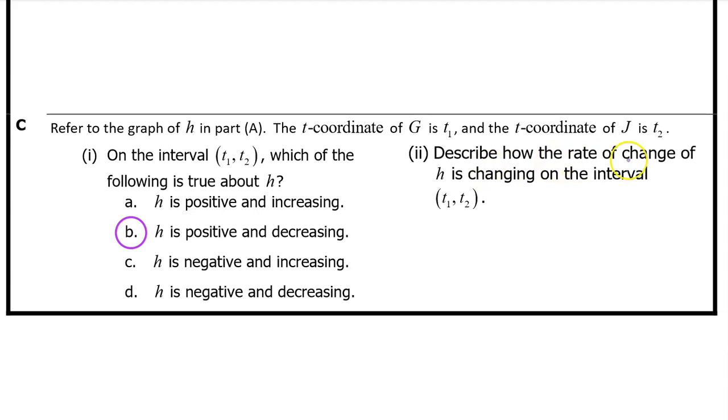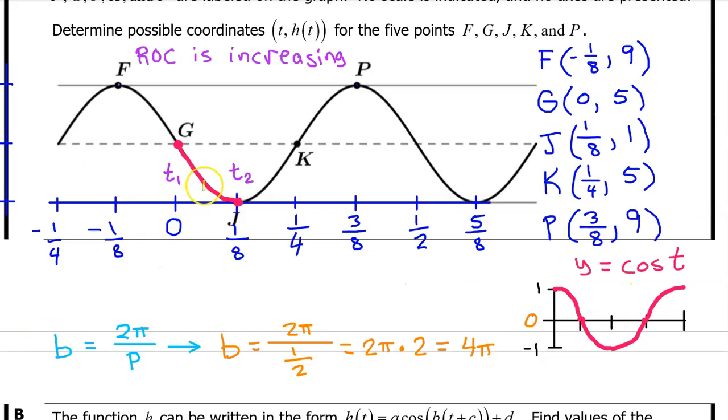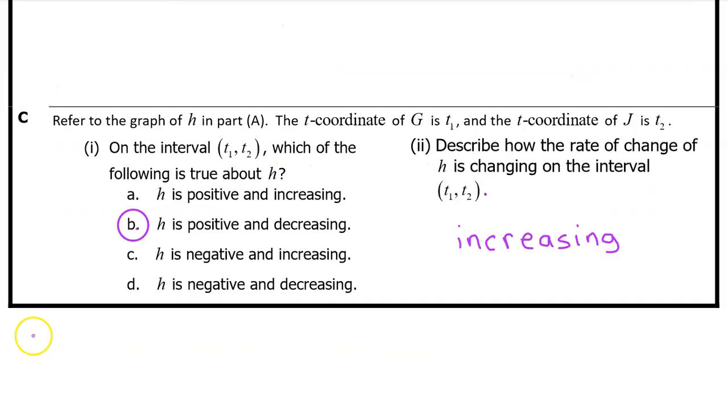C part two. Describe how the rate of change of h is changing on the interval from t1 to t2. In unit one, we learned that wherever h of t is concave up, the rate of change is increasing. And wherever h of t is concave down, the rate of change is decreasing. On the interval from t1 to t2, h of t is concave up. So the rate of change is increasing. Since they didn't ask us to explain our reasoning, it's safest to give a one-word answer. Just say increasing.